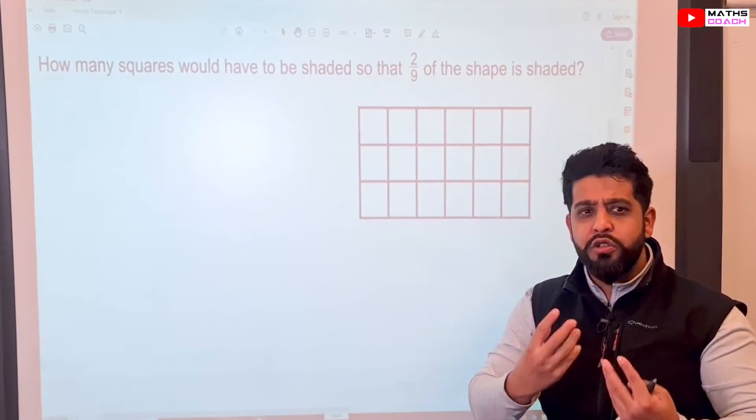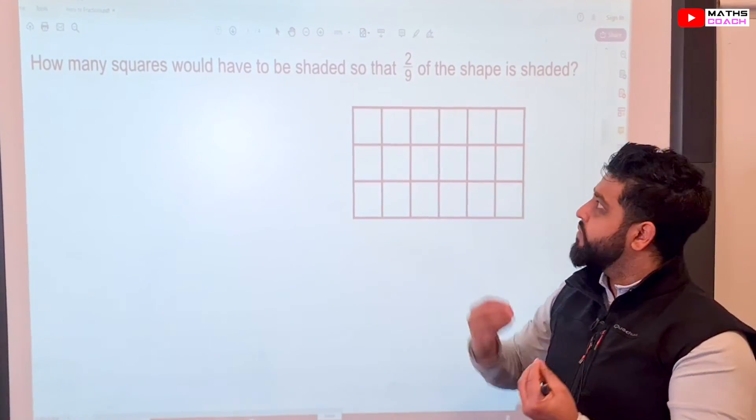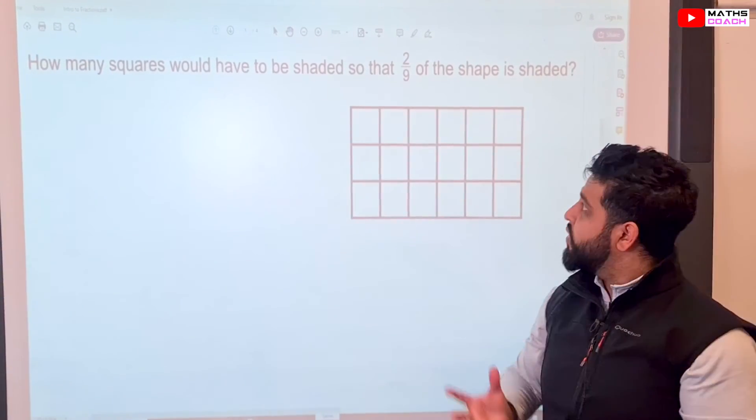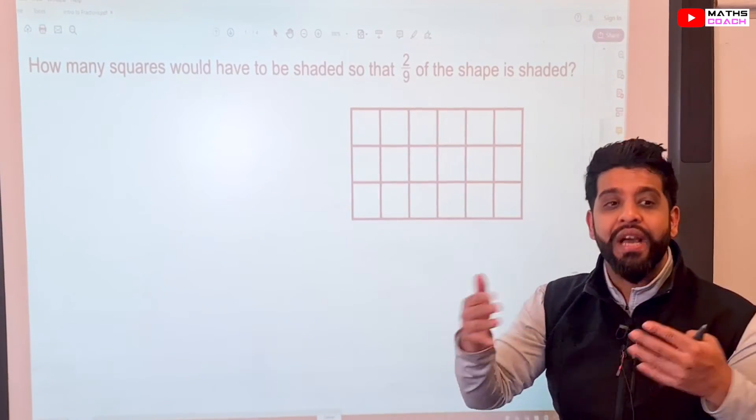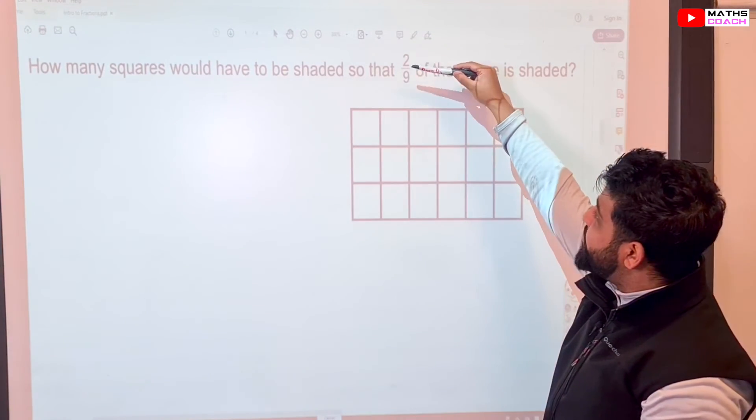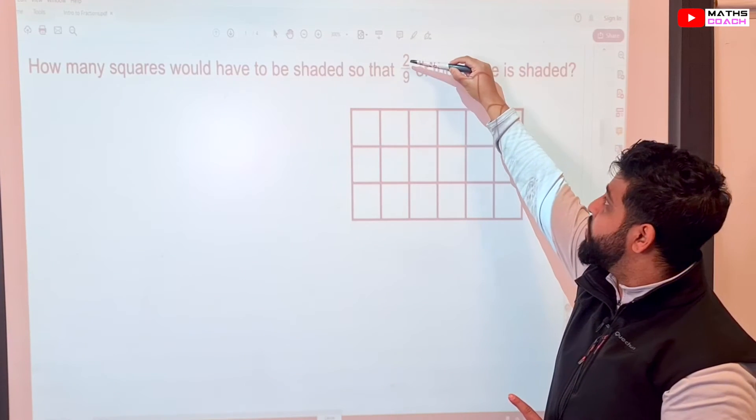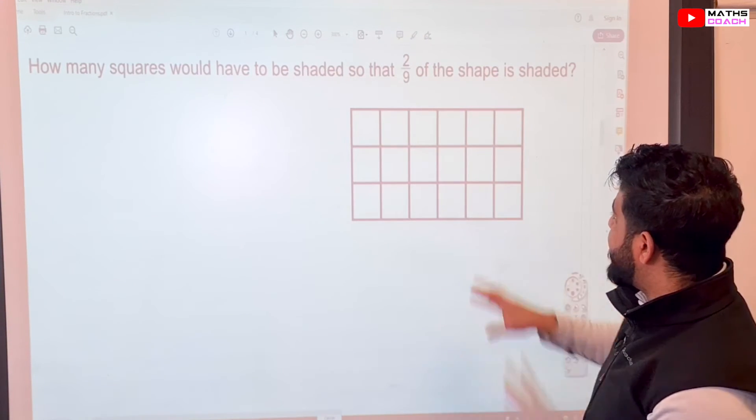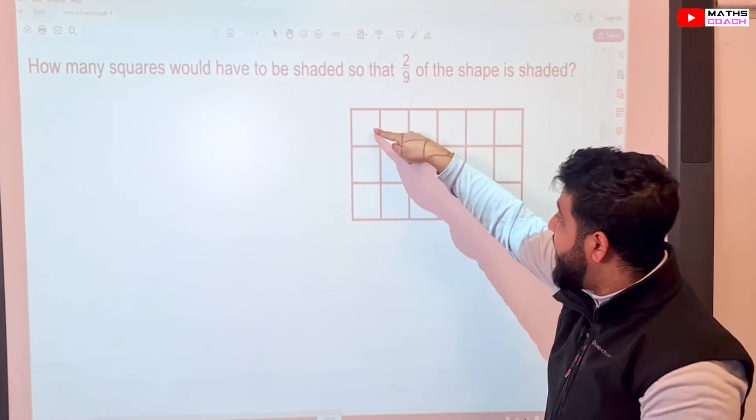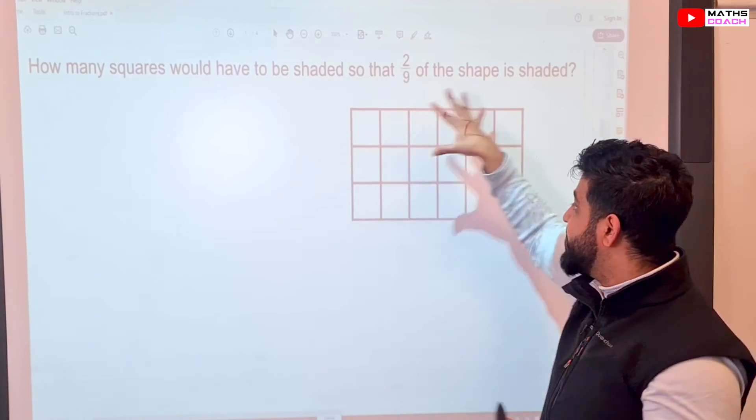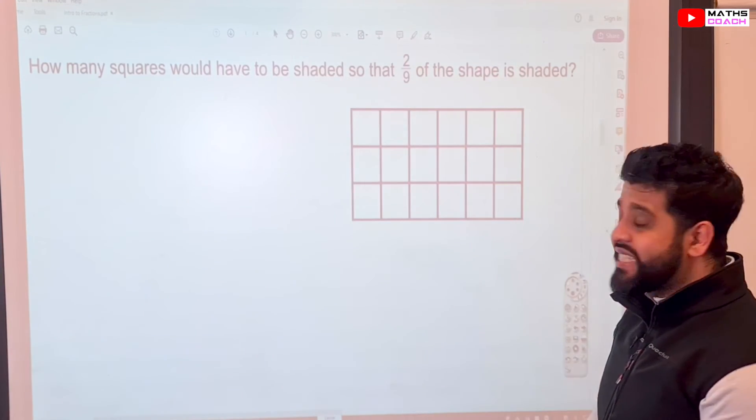Over time, you'll get used to how to pronounce the fractions, but it's no big deal if you just say two out of nine for now. But we would normally say two ninths. So we want to shade for every nine squares that we see, we want to shade two of them. So let's find out once again how many squares we have in total. One, two, three, four, five, six again and three down. So therefore, we have 18 squares in total, just like before.